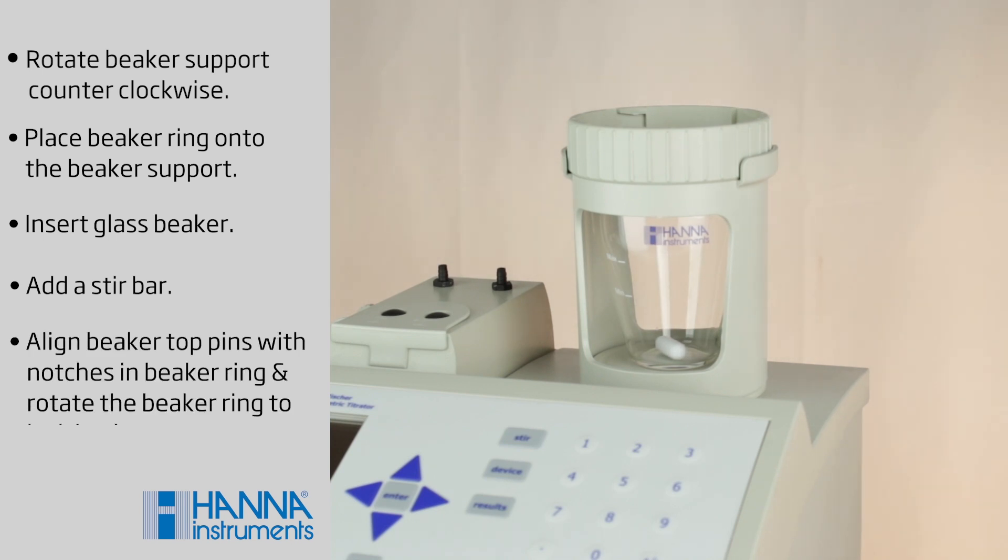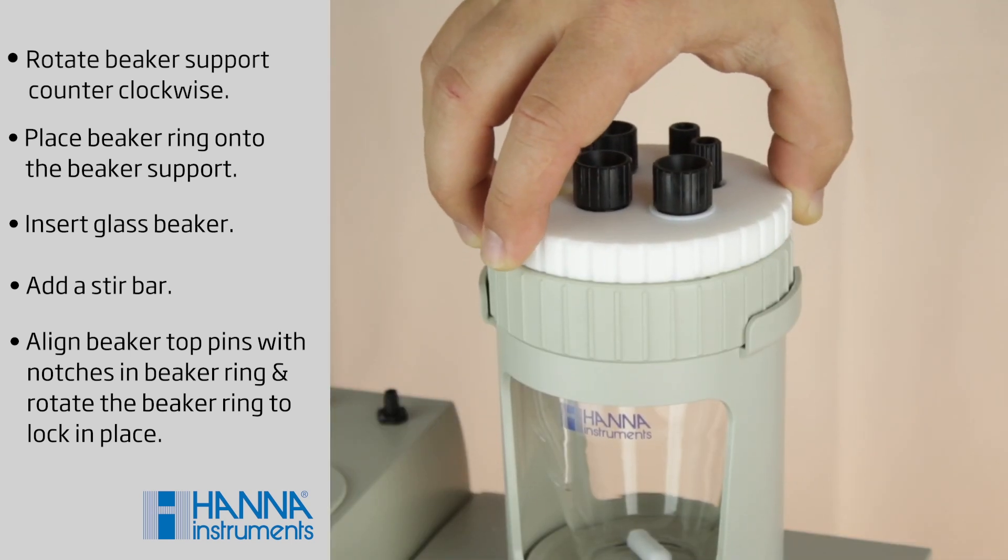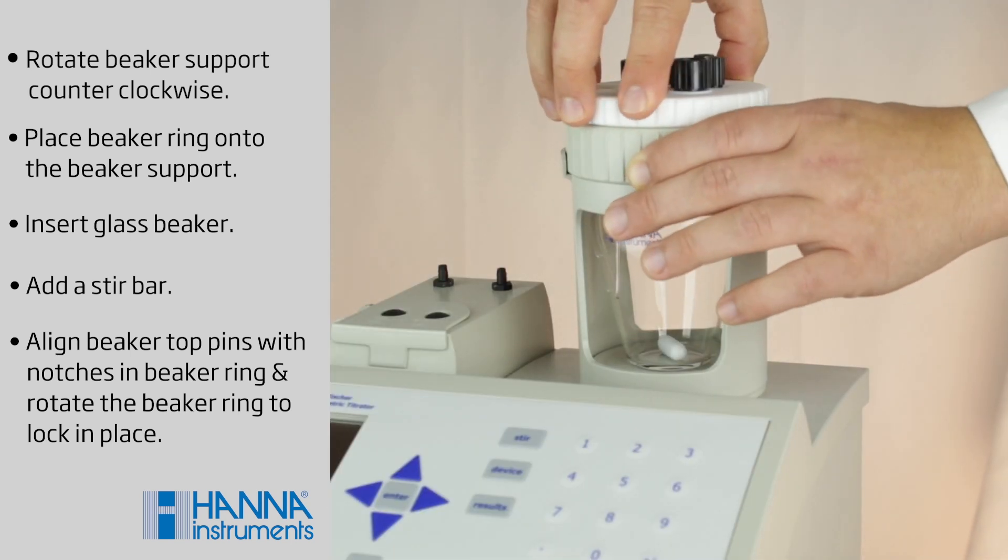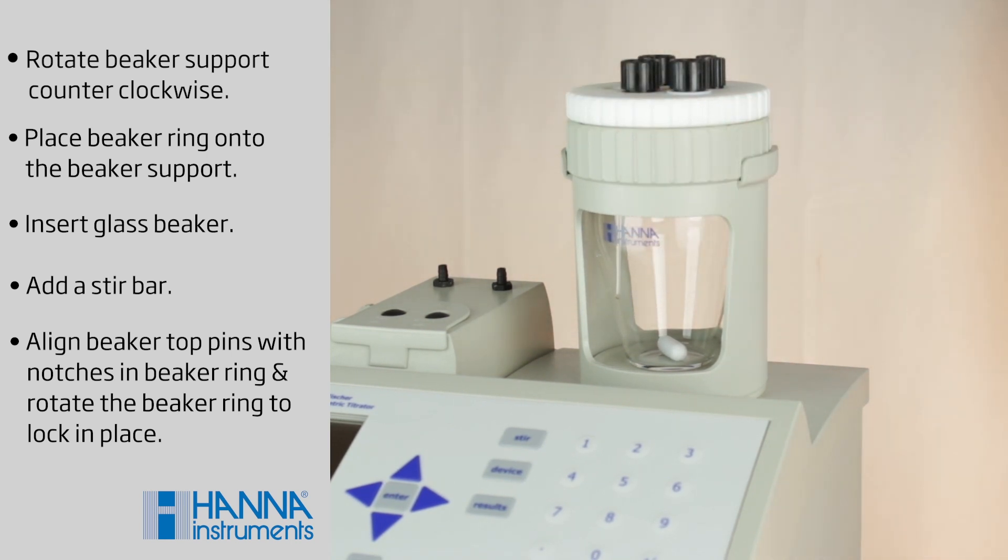Carefully place the beaker top onto the glass beaker and secure in place by pushing the top through the beaker ring with the notches aligned with the force seal pins of the beaker top. Finally, twist the beaker ring to lock the top in place.